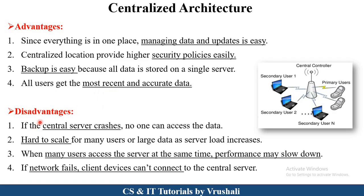On the other side, there are disadvantages. If the central server crashes, no one can access the data. It is also very hard to scale because many users access the same database at the same time, which increases server load and slows down performance. Additionally, if the network fails, client devices cannot connect to the central server. All these disadvantages are overcome in different architectures like client-server, parallel, or distributed architecture.